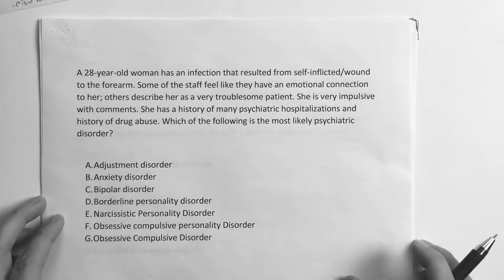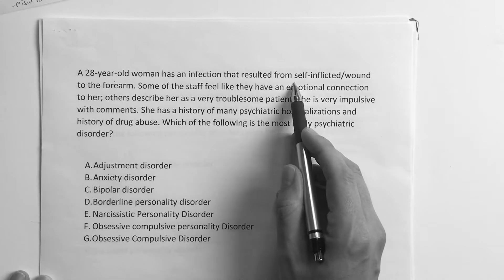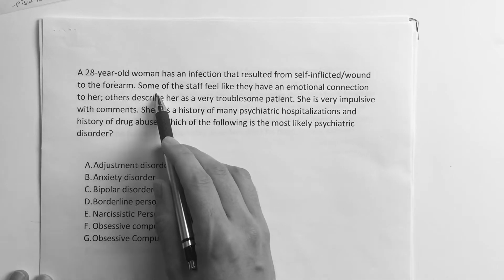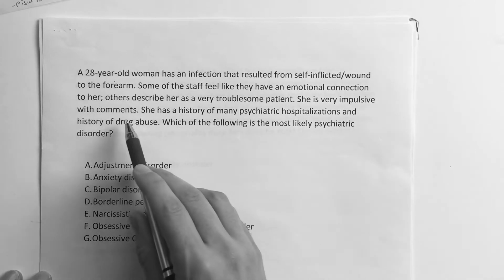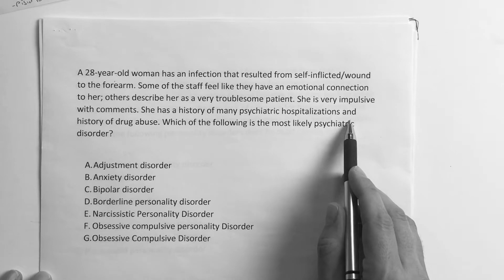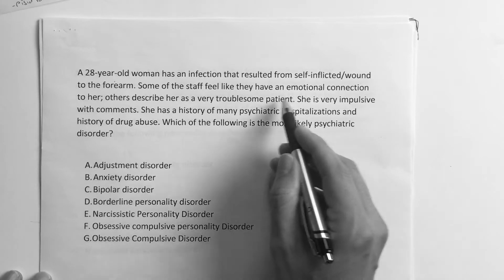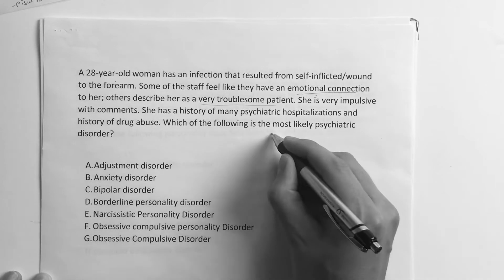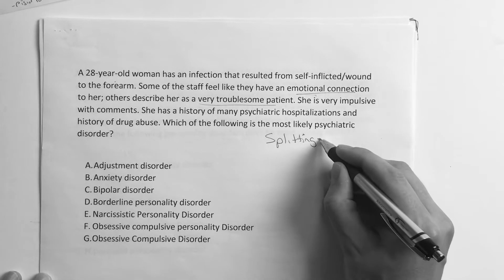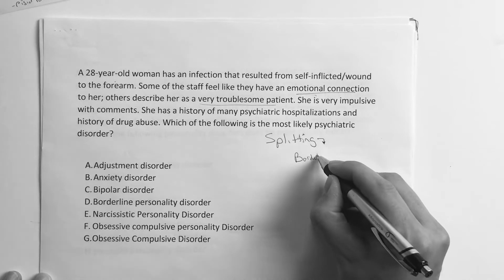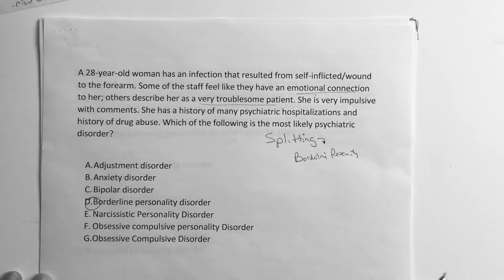Here's the first personality question. A 28-year-old woman has an infection that resulted from a self-inflicted wound to the forearm. Some of the staff feel like they have an emotional connection to her; others describe her as a very troublesome patient. She's very impulsive, has a history of many psychiatric hospitalizations and drug abuse. When some staff feel a connection and others find her very troublesome, that's called splitting — and splitting will always be associated on step exams with borderline personality disorder. That's answer choice D.